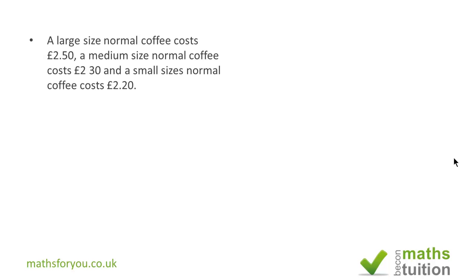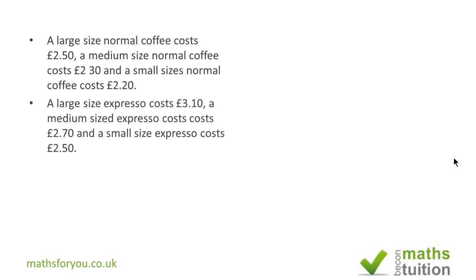This next slide is about cost, so we are going to produce a cost matrix. What you're now seeing is the cost matrix for normal coffee, followed by the cost matrix for espresso coffee. We are asked to express this information as a 2x3 matrix — so 2 rows and 3 columns.